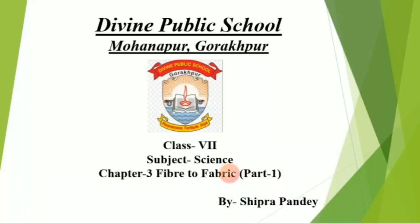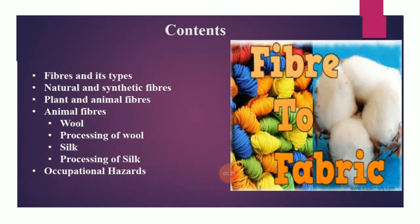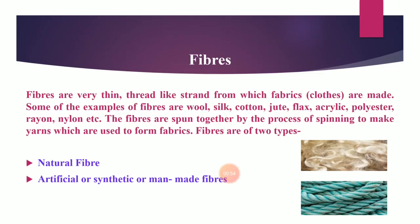Hello students, good morning. Today I am going to explain the third chapter of Class 7 Science, that is Fiber to Fabric. This chapter is lengthy, so I will explain it in two parts. This is the first part of Chapter 3, Fiber to Fabric. We will study about fibers and their types, natural and synthetic fibers, plant and animal fibers, wool and silk, their processing, and occupational hazards related to wool and silk industry.